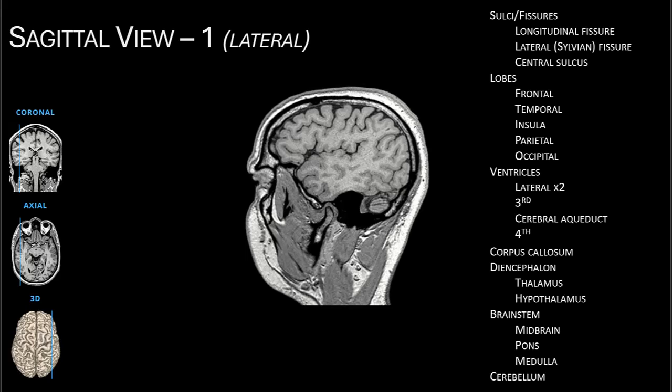Let's look at these features on a sagittal plane, starting the most laterally, then moving directly to the mid-sagittal view. In this very lateral sagittal view, similar to a diagram from a textbook, we can see the lobes: the frontal, temporal, parietal, and occipital. Between the frontal and temporal lobe we see the lateral fissure, also called the sylvian fissure. Between the frontal and parietal lobes is the central sulcus. Finally, at the posterior inferior region, we can see the lateral surface of the cerebellum.